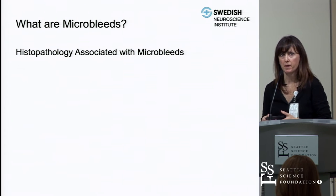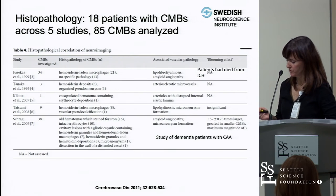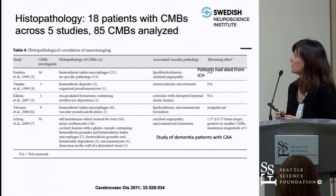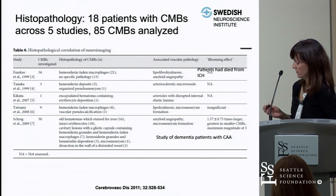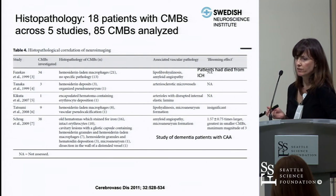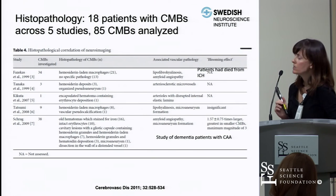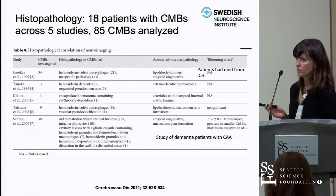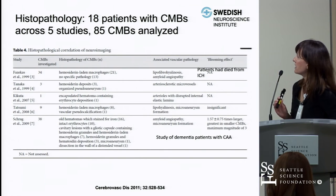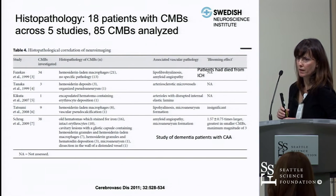What do microbleeds look like under the microscope? There have been several histopathological studies, and this meta-analysis published in 2011 summarizes them. The first study came out in 1999 by Dr. Fazekas. These studies show a consistent pattern: hemosiderin-laden macrophages that produce the dark signal on gradient echo images, along with other markers of vascular disease, namely lipofibrohyalinosis associated with hypertensive vasculopathy and amyloid angiopathy.